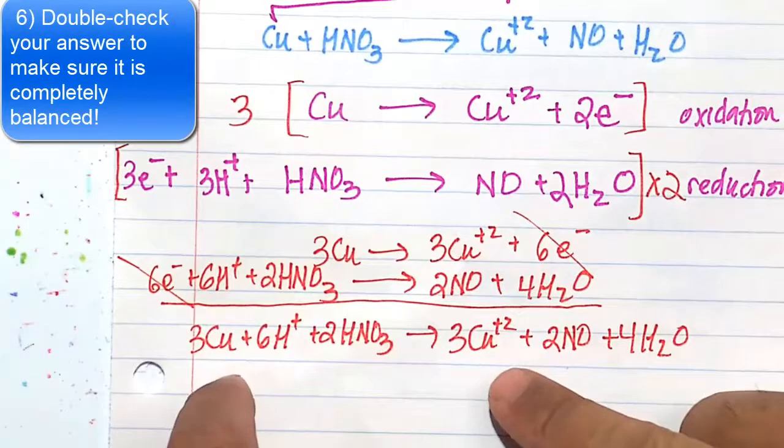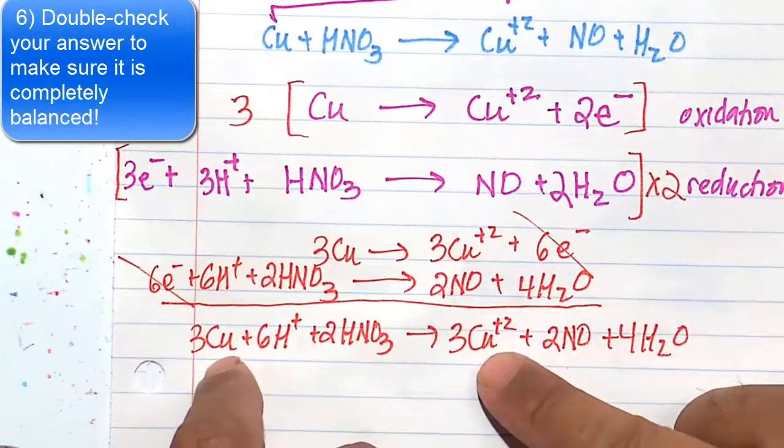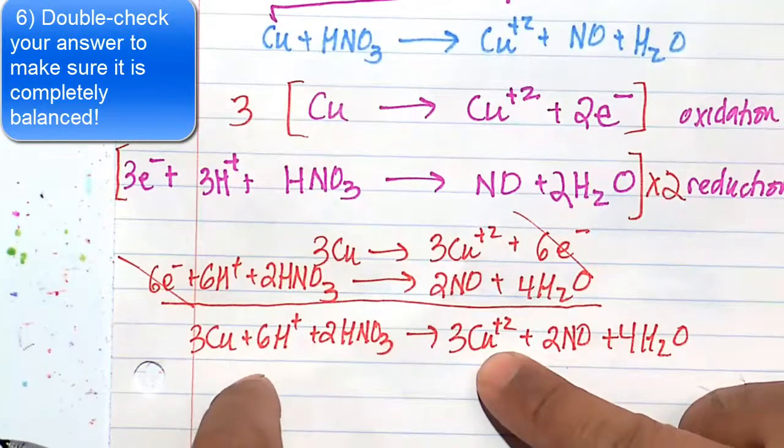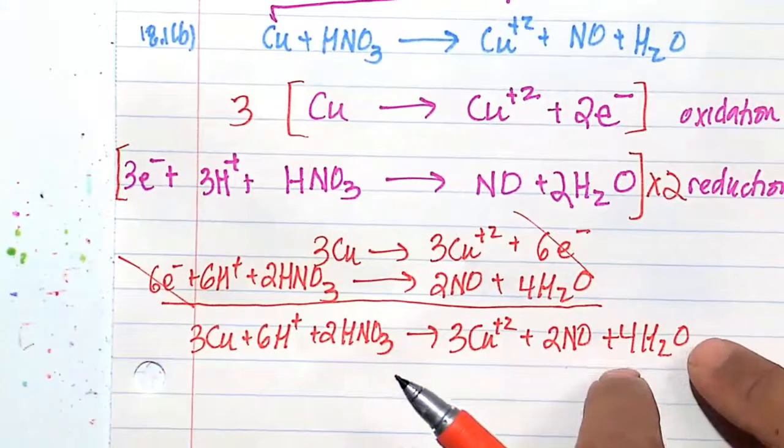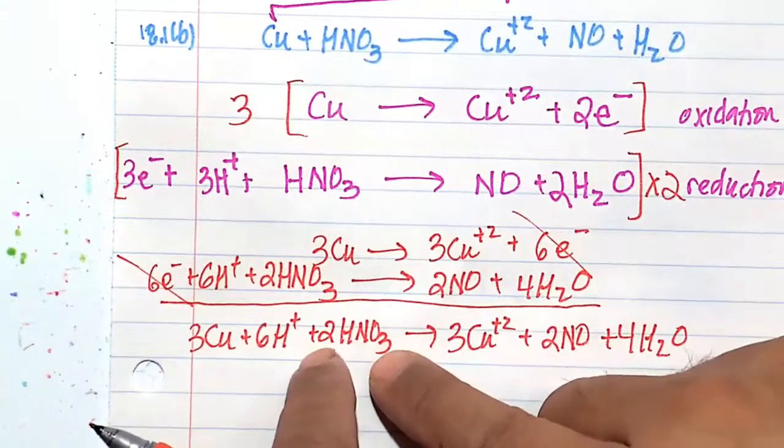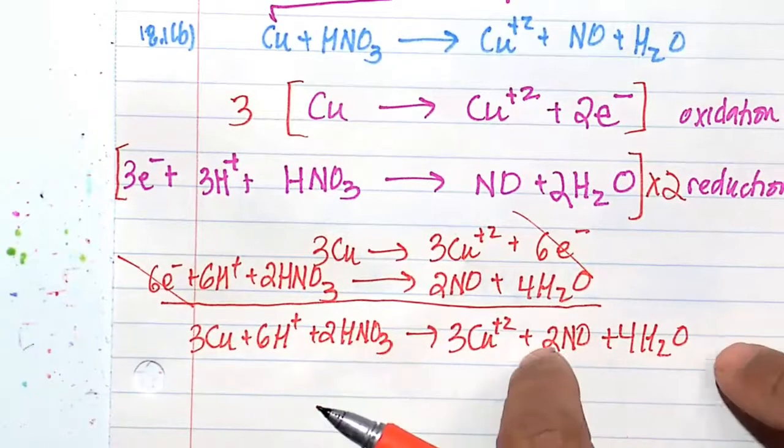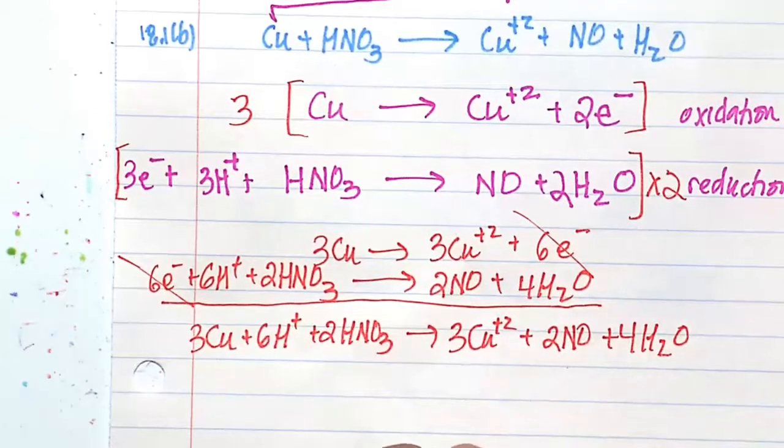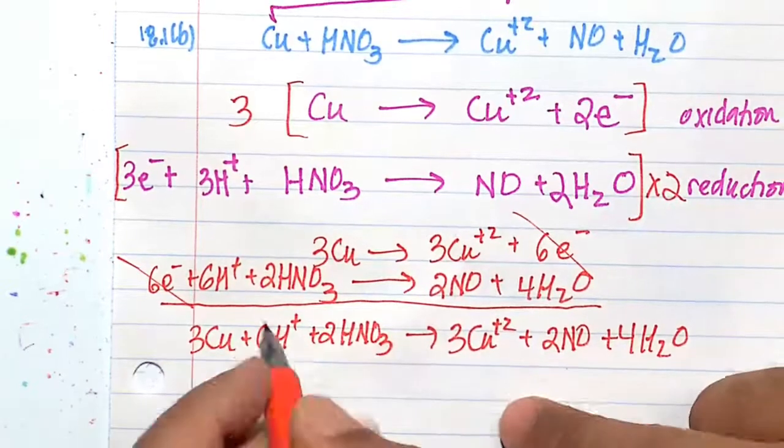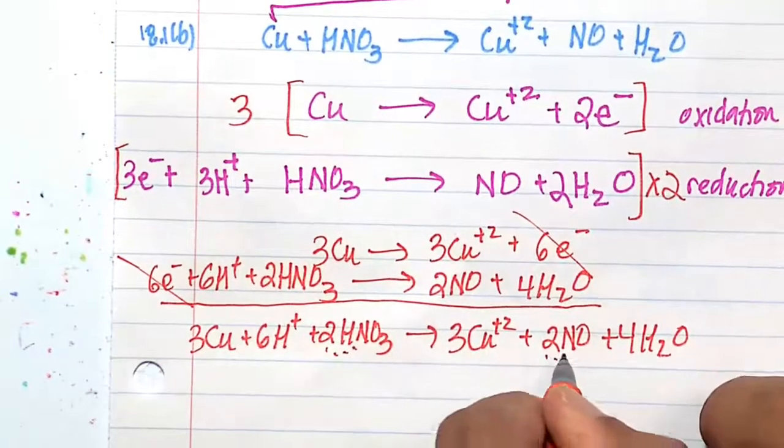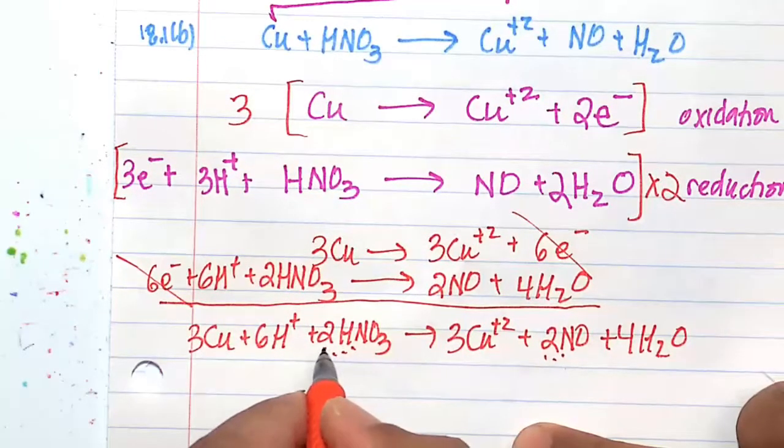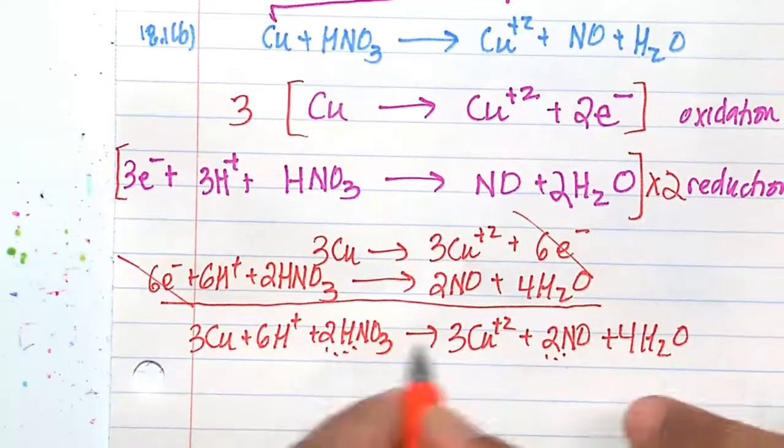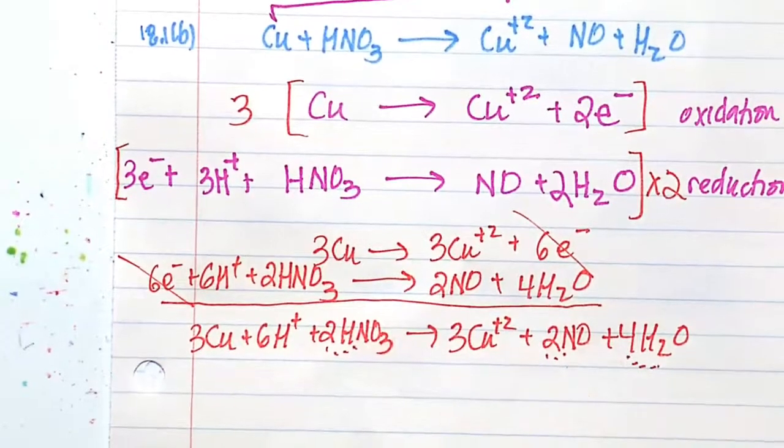Let's do a double check here, just looking at the atoms. We have 3 Cu, 3 Cu. Let's look at the oxygens here. 2 times 3 is 6 oxygens. And here 2 oxygens plus 4 oxygens is 6 oxygens. And nitrogens, we have 2 nitrogens, and we have 2 nitrogens. Let's do the hydrogens here. 6 plus 2 is 8 hydrogens, and then 4 times 2 is 8 hydrogens.